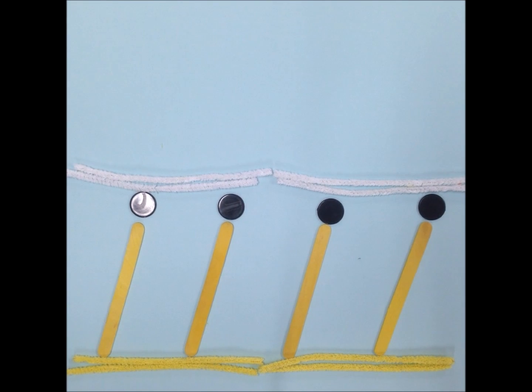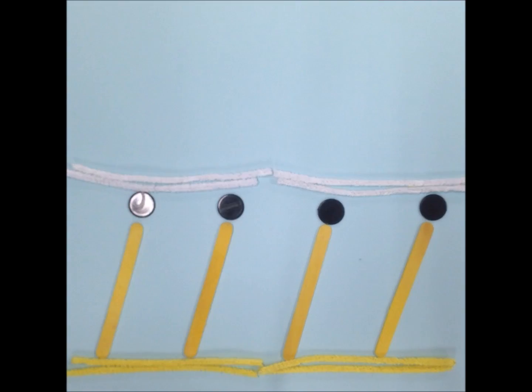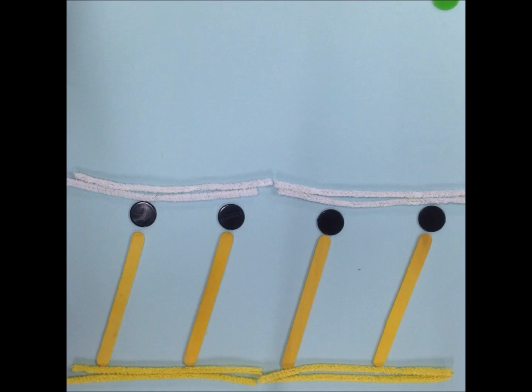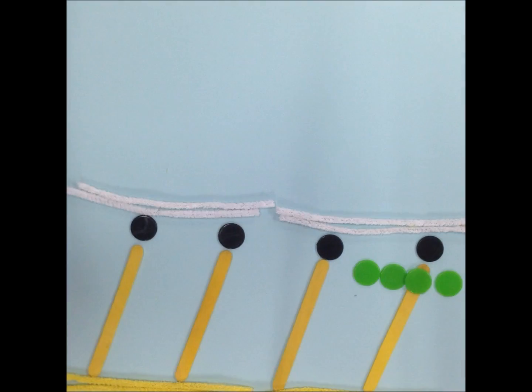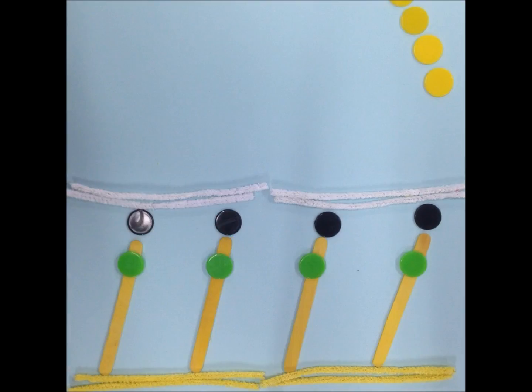The ATP is released into the myosin heads which, when it breaks down, releases energy. That energy is then used to let the myosin heads attach to the actin at the binding sites. But the troponin is in the way, which is why calcium is released and removes the troponin, allowing the myosin heads to attach to the actin.